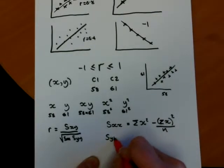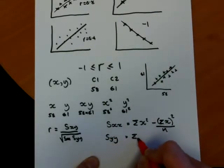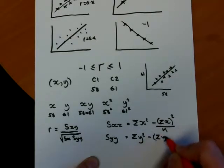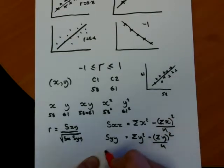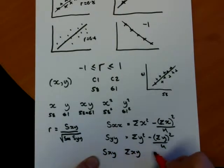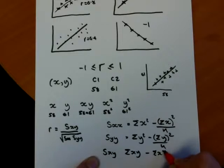The sum of y, syy will be exactly the same except we'll be writing y's instead of x's. And the sum of xy, it's like one of the y's is replaced with an x. So we've got the sum of xy minus the sum of x times the sum of y all over n.